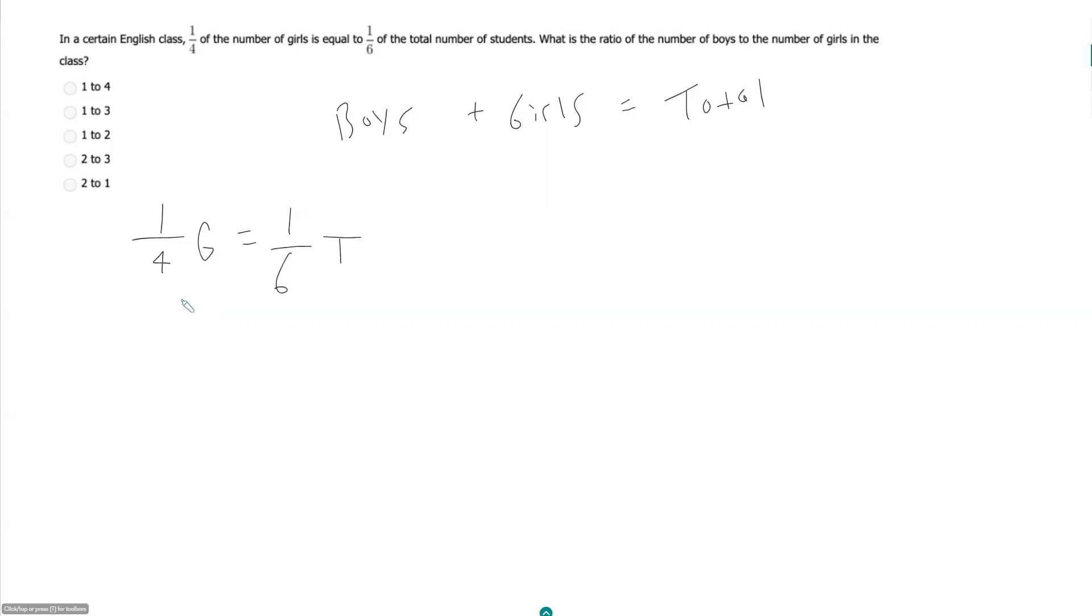So based on this, if I multiply each side by six and then each side by four, I get six G is equal to four T, and then I can fill in.